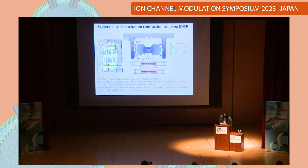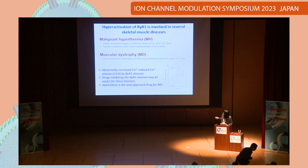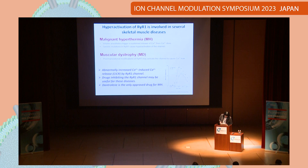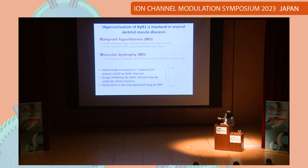It is well-known that RyR1 is the key molecule in excitation-contraction coupling. Hyperactivation of RyR1 is involved in several skeletal muscle diseases such as malignant hyperthermia and muscular dystrophy. There is a lot of work on RyR1 related to malignant hyperthermia, which summarizes the abnormally increased calcium-induced calcium release mediated by RyR1 channels. Drugs inhibiting the RyR1 channel may be useful for these diseases. Dantrolene is the only approved drug for MH.